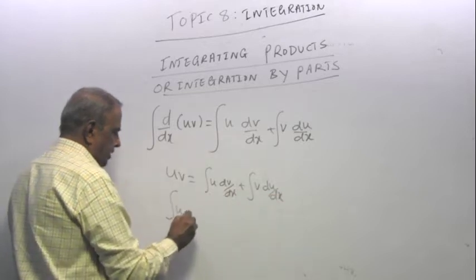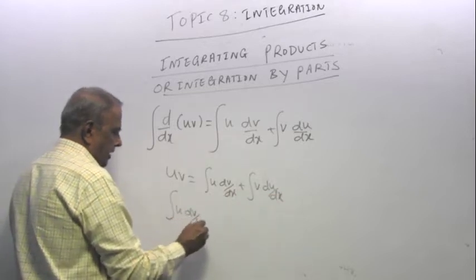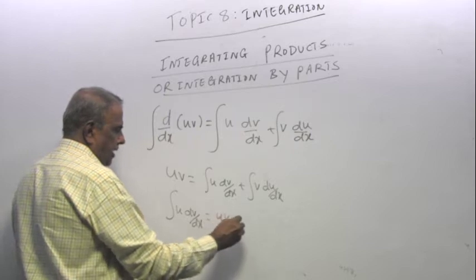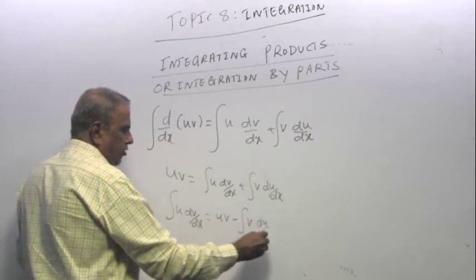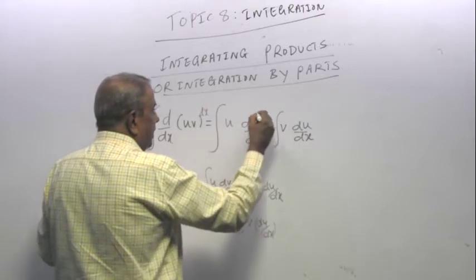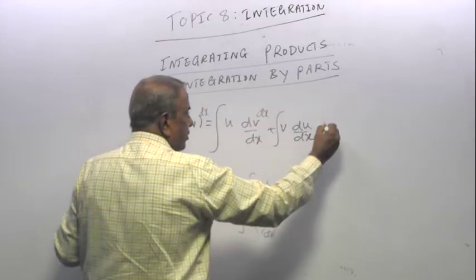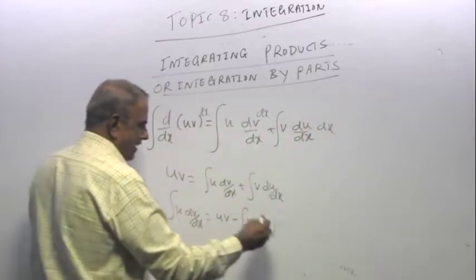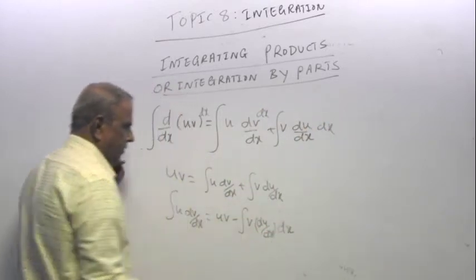So what is integral u dv/dx equal to? uv minus integral v du/dx. Of course, I should put a dx here, I should put a dx here, I should put a dx here. I will write it later.